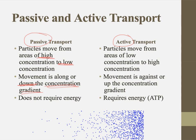On the other hand, active transport is the movement of particles from areas of low concentration to high concentration. We say that is against, or up, the concentration gradient, and that requires ATP.